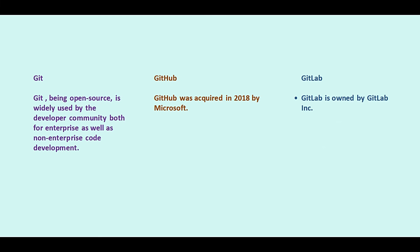Git, being an open source tool, is widely used by the developer community both for enterprise as well as non-enterprise code development. GitHub was acquired by Microsoft in 2018, while GitLab is owned by GitLab Corporation.